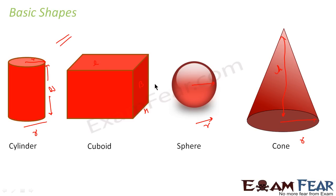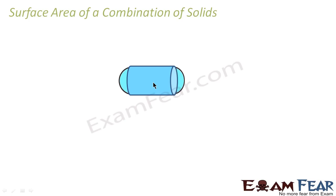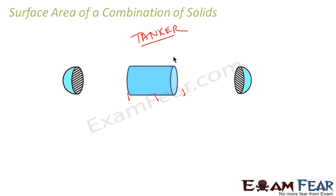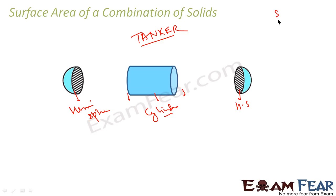In real life, we don't often see basic shapes alone — we see combinations. For example, a milk tanker is a combination of a cylinder and two hemispheres. If you break it apart, you get one cylinder in the middle and a hemisphere on each end. So we break the complex figure into simpler ones whose surface area and volume we already know.